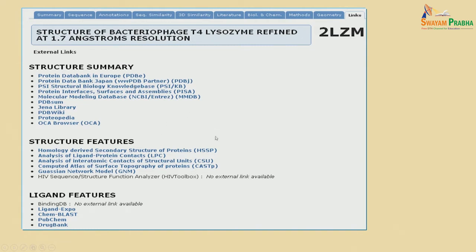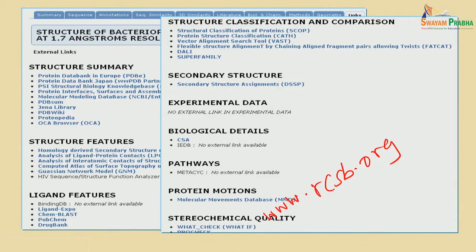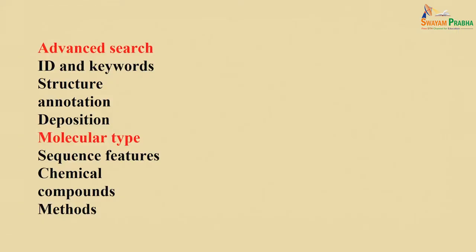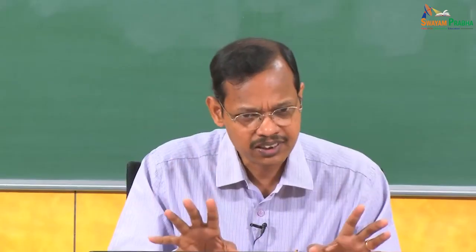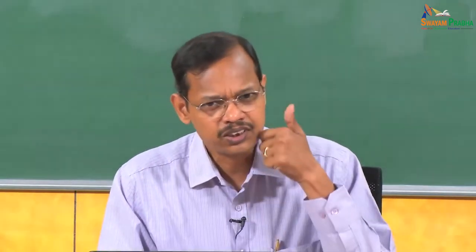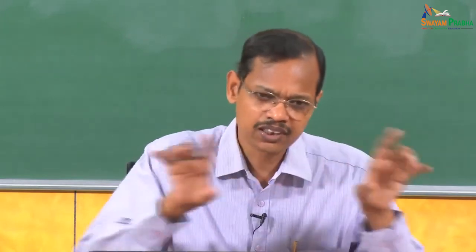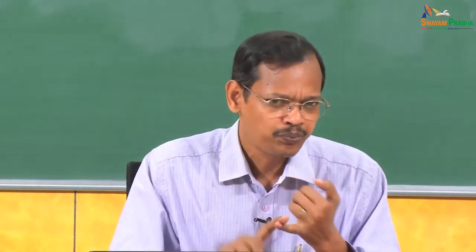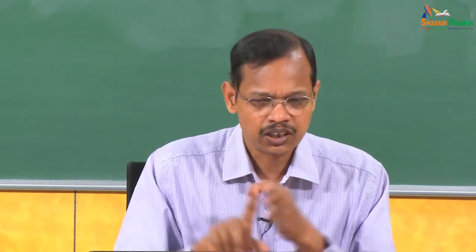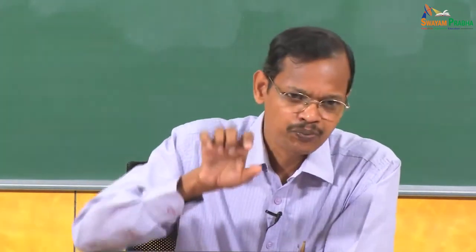When you go to the PDB at rcsb.org, you can get all the information regarding a protein — just try any PDB ID and you can see the details available. The PDB has several options to search and get data. First is the simple search, where you can search with any PDB ID, protein name, or keywords to get the information.